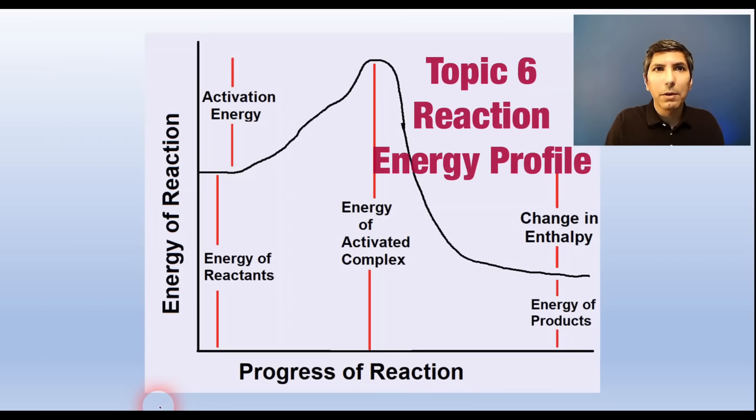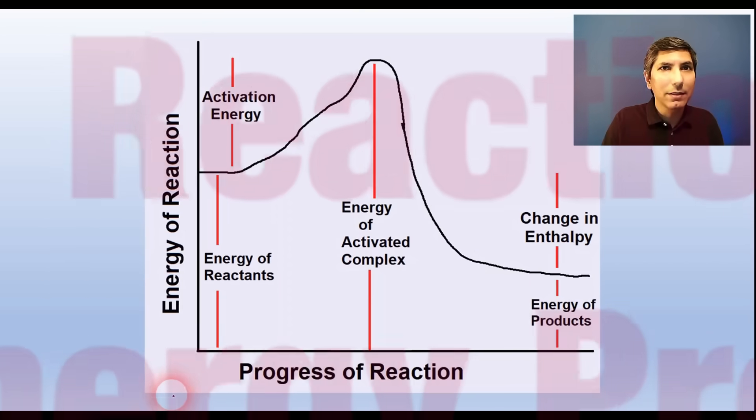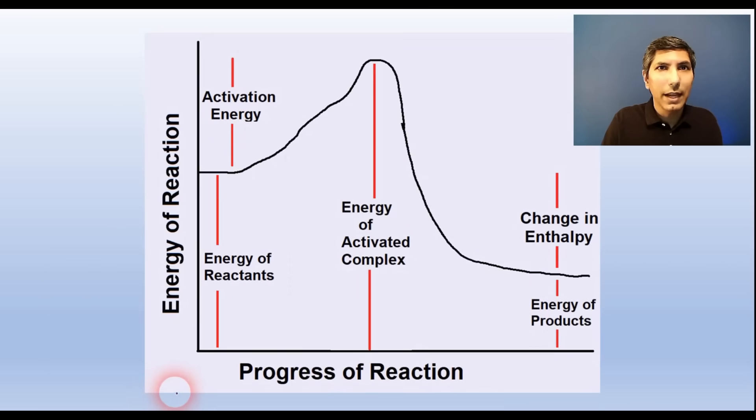We can draw a graph that represents the energy of a reaction as it progresses from reactants to the transition state, then on to the products. Notice some key points on the graph. The distance from the beginning up to the peak is the activation energy of the forward reaction. The distance between energy of reactants and products is the change in enthalpy which tells us if the reaction is exothermic or endothermic.